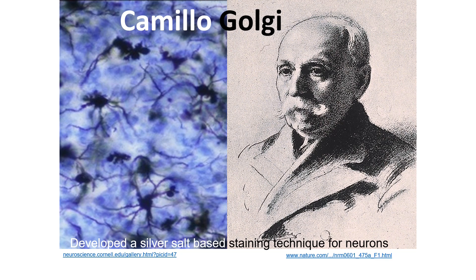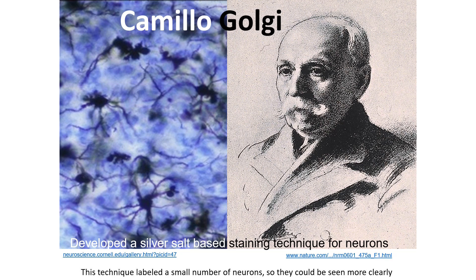A breakthrough was finally achieved in 1873 by the work of Camillo Golgi. You might have heard of Golgi's name in the context of Golgi apparatus or Golgi bodies, which are cell organelles. What Golgi developed was a method in which he put two salts into the brain tissue, and those salts were randomly taken up by certain units. Because the probability of uptake was very low, it converted a dense tissue into a sparsely labeled tissue that could then be imaged under the microscope.